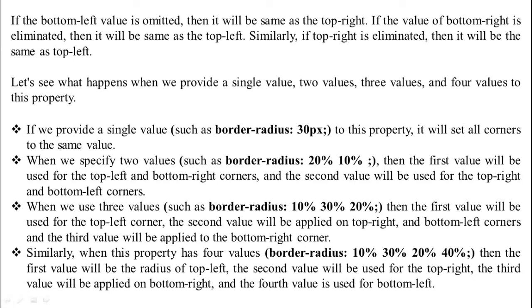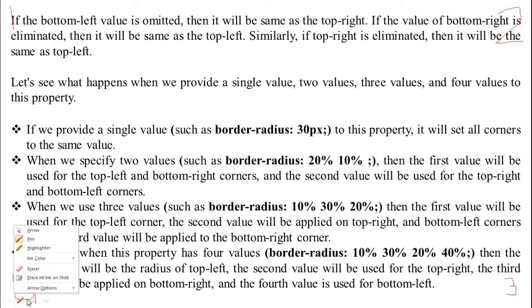When we use three values such as border-radius: 10% 30% 20%, the first value is for the top-left corner, the second is applied on the top-right and bottom-left corners, and the third value is automatically applied to the bottom-right corner. When the property has four values — 10%, 30%, 20%, and 40% — the first is for top-left, second for top-right, third for bottom-right, and fourth for bottom-left. Follow this order: 1, 2, 3, 4.